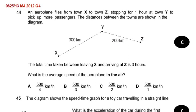X to Y is 300 km, and Y to Z is 200 km. The total time taken between leaving X and arriving at Z is 3 hours. What is the average speed of the aeroplane in the air? A little tricky.